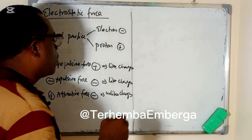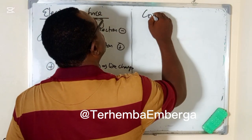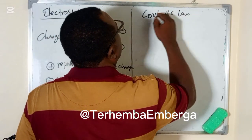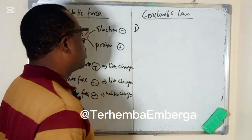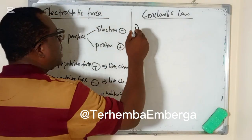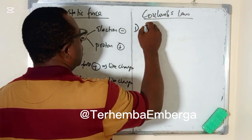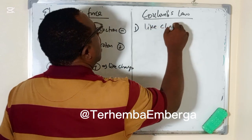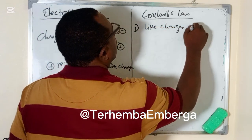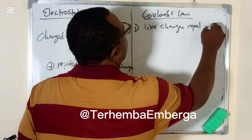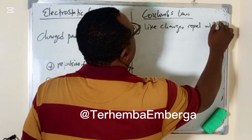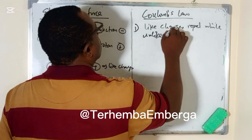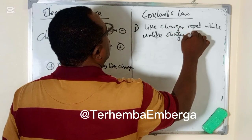So Coulomb's law — the first part states that like charges repel, while unlike charges attract.